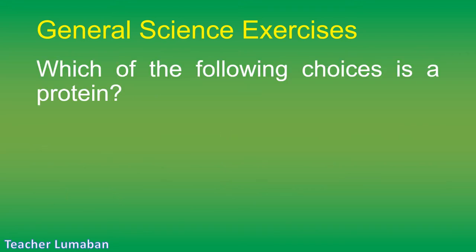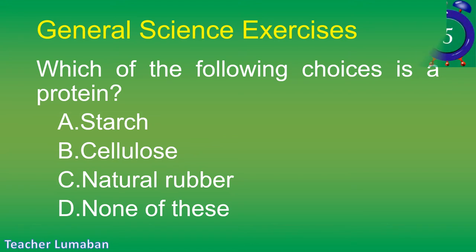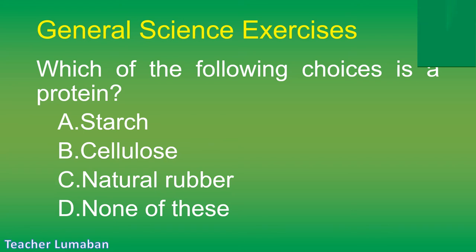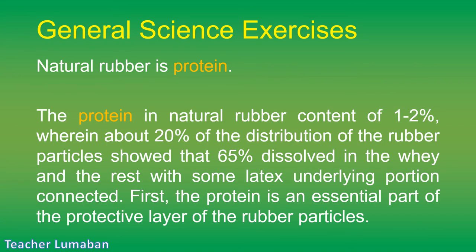Which of the following is a protein? Letter A: starch. Letter B: cellulose. Letter C: natural rubber. Letter D: none of these. The correct answer is Letter C: natural rubber. Natural rubber is a protein. The protein content of natural rubber is 1–2%, wherein about 20% of the distribution of the rubber particles showed that 65% dissolved in the whey and the rest connected with the latex. The protein is an essential part of the protective layer of the rubber particles.